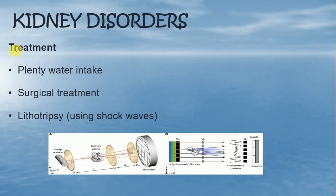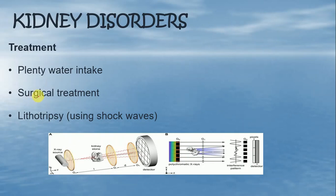Let's see the treatment — क्या treatment किये जा सकते हैं kidney stone के patients को recover करने के लिए. Number one, plenty water intake — water intake large quantity में होना चाहिए, बहुत ज्यादा पानी पीना चाहिए, ताके blood के अंदर salts की concentration normal रहे और urine जब बने तो dilute बने. अब जब kidney में stone बन गया, तो next solution है surgical treatment — means surgery करके, जहाँ पे भी stone है, उसे वहाँ से निकाल लिया जाए.